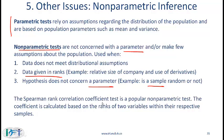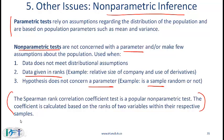The Spearman rank correlation coefficient is a popular non-parametric test. The coefficient is calculated based on the ranks of two variables within their respective samples. For the CFA Level 1 exam, you need to know the basic information presented here — the probability of being tested on more detailed information is extremely low. The curriculum itself points out that for more details you need statistics textbooks.